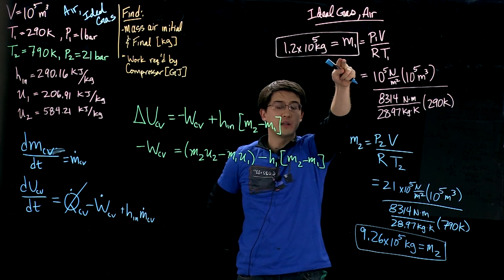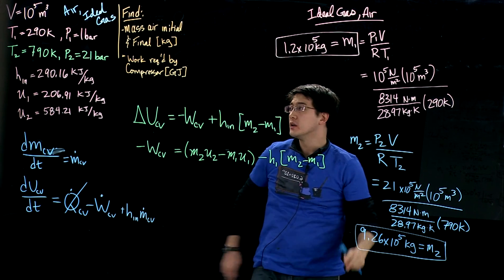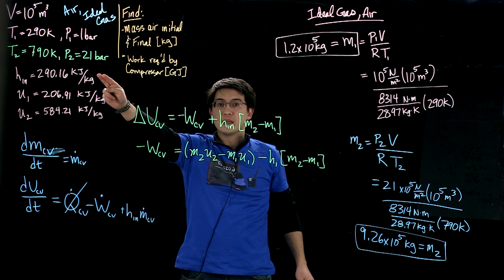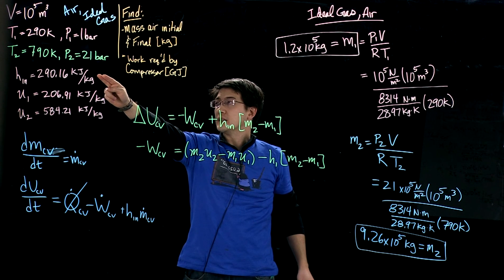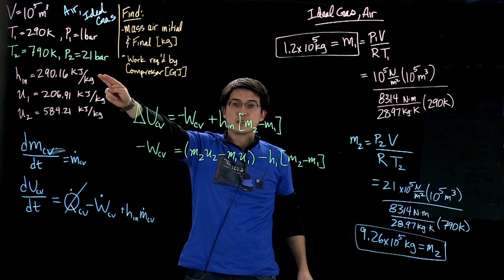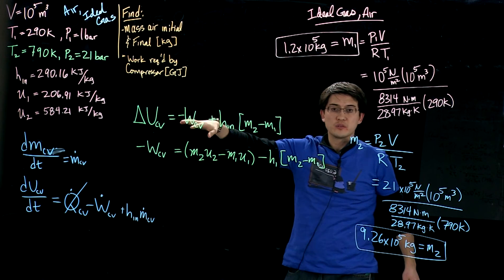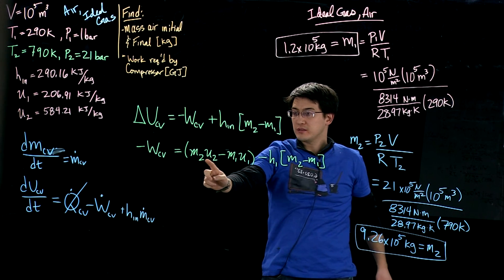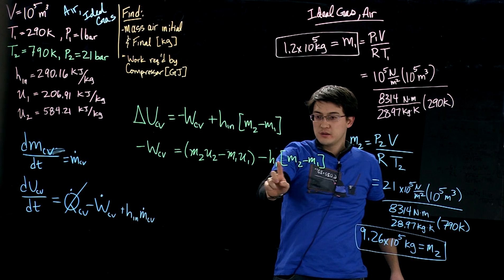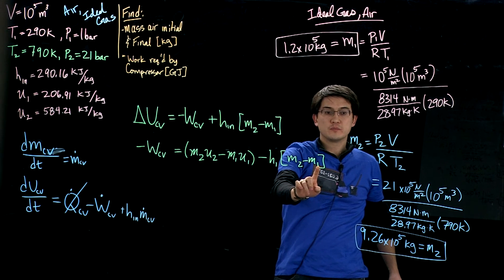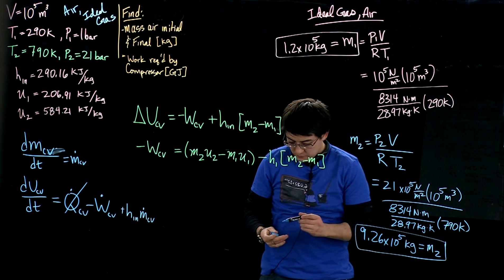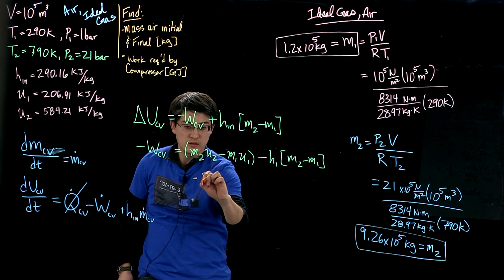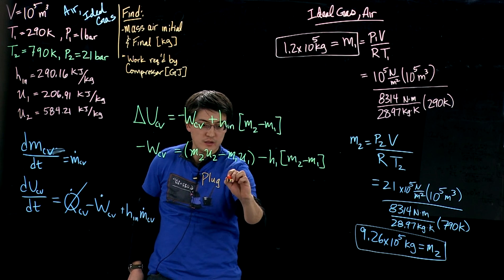We now have mass one, mass two, specific internal energy one and two, and enthalpy at the inlet of air, which doesn't change because the air on the outside is always coming in the same, so this doesn't change, it's constant. We now know all of our terms, so we can plug those in.